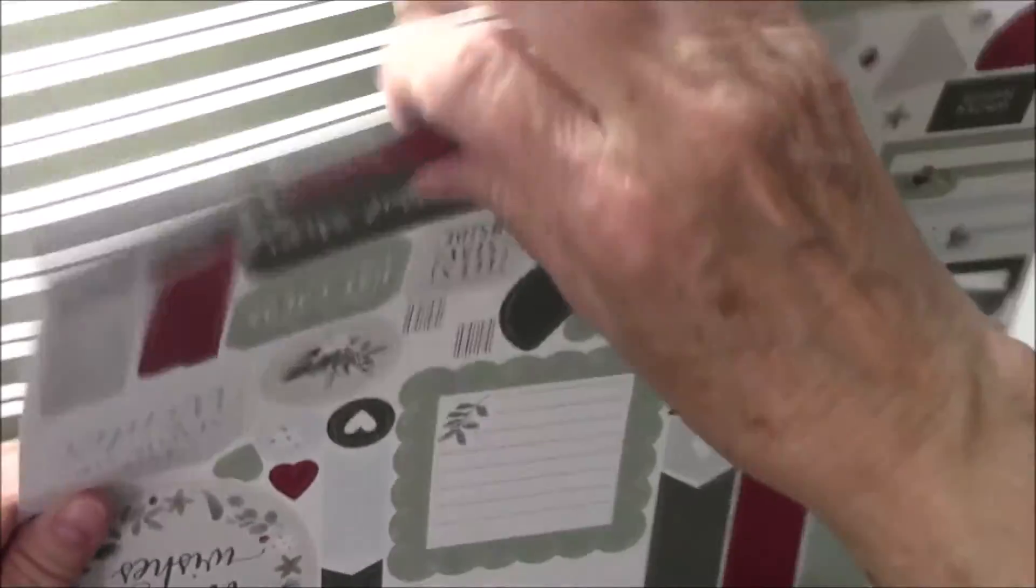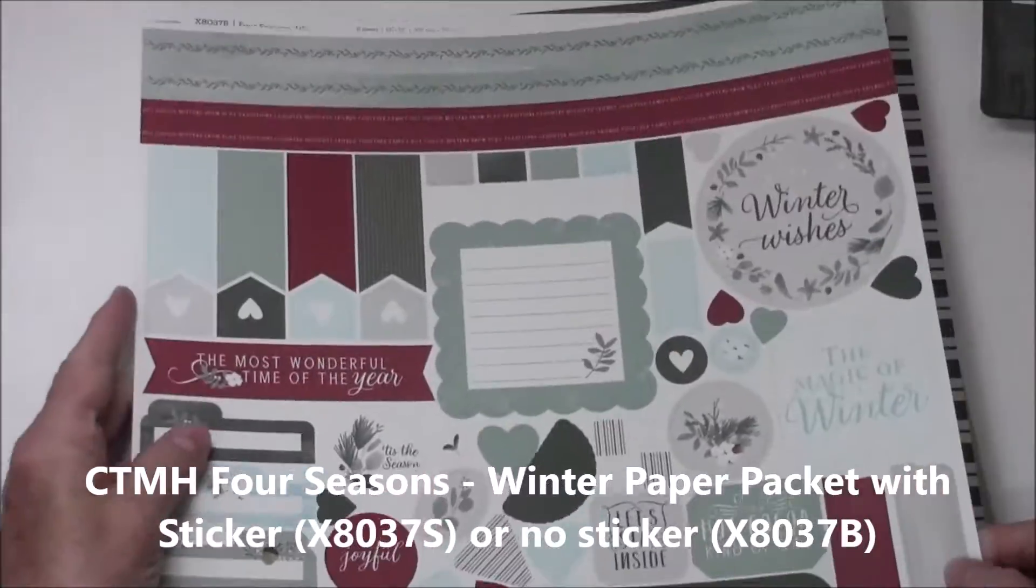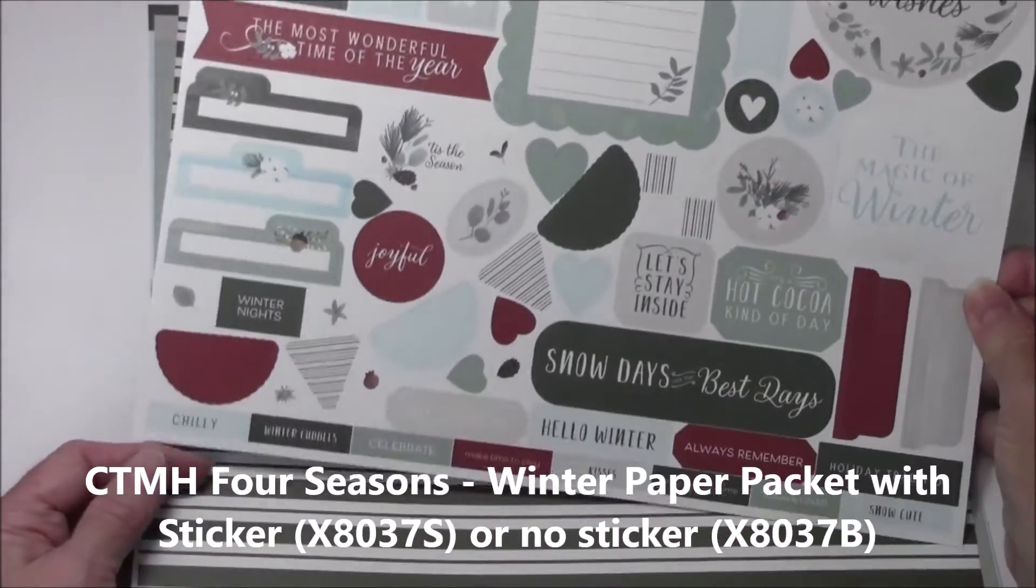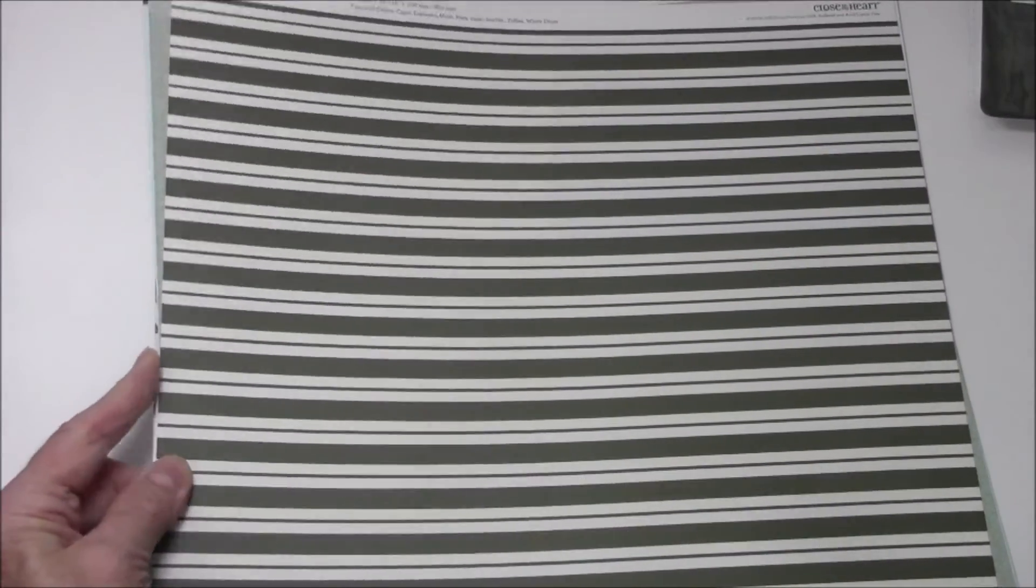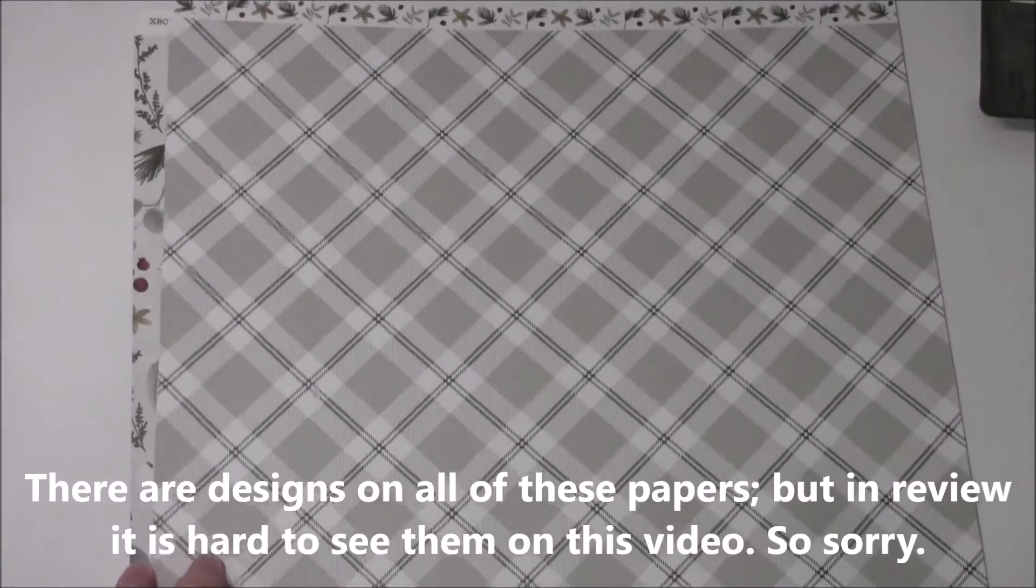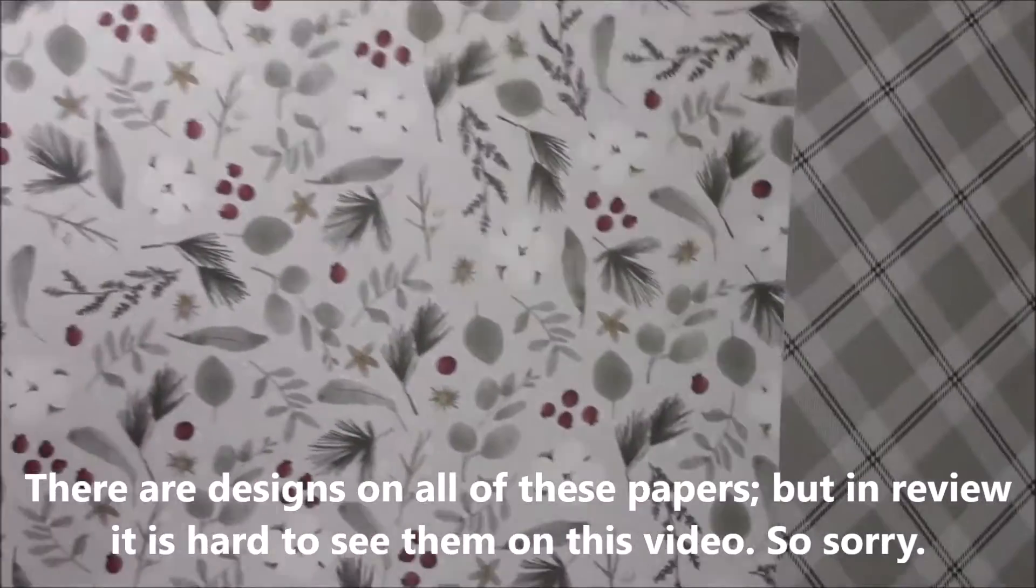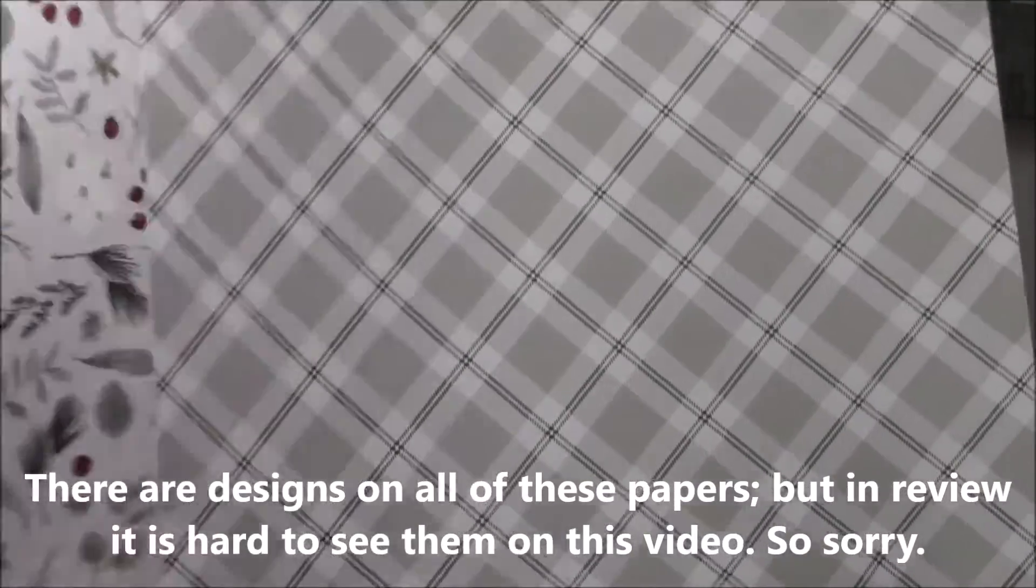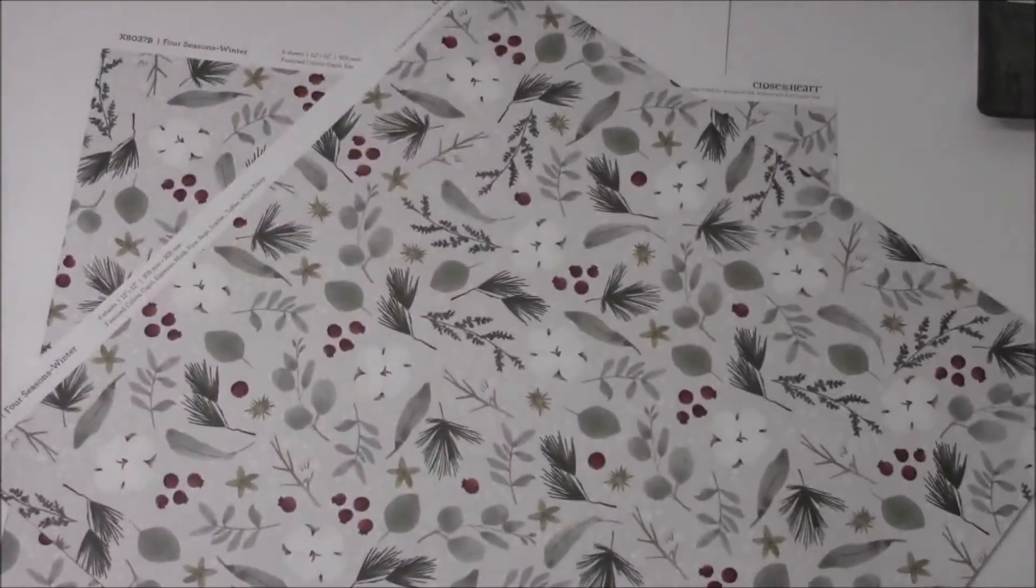And then the next one is winter. Winter is the next one that I've got out here and that one is again the sticker sheet. And then we have the first sheet for this one, the four seasons winter, and so that's one side and that's the other side. And then this is the next sheet, two sheets one on each side. And then this one is the next two sheets. This is one of my favorite ones and this plaid is really pretty with it.